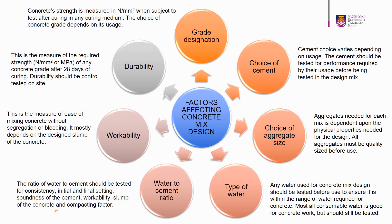Strength and durability of the concrete mix design are dependent upon the following factors. Number 1: Grade Designation — concrete strength is measured in newton per millimetre square or megapascal after curing, and the choice of concrete grade depends on its usage. Number 2: Choice of Cement — cement choice varies depending on usage and should be tested for performance before being used in the design mix. Number 3: Choice of Aggregate Size — aggregates needed for each mix depend on the physical properties required for the design, and all aggregates must be quality-sized before use. Number 4: Type of Water — any water used should be tested before use to ensure it is within the required range; most consumable water is good for concrete work but should still be tested.